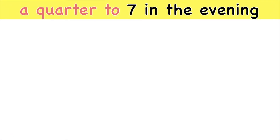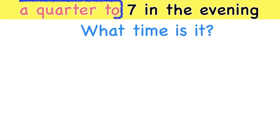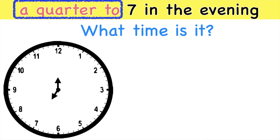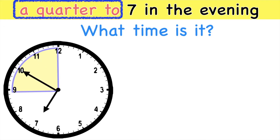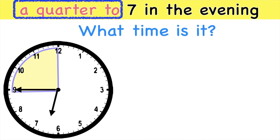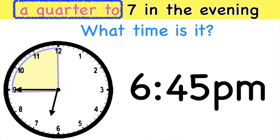How about this one? A quarter to 7 in the evening. What time is it? As you can see, we use the word quarter to. When you say quarter to, that is 15 minutes before. So let's count backwards: 5, 10, 15. It's 6:45 p.m. Always remember, when the hour hand is between two numbers, you're going to choose the smaller one, because it's not yet 7 o'clock. That's why the time is 6:45 p.m.